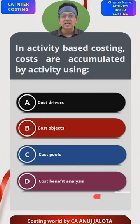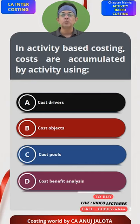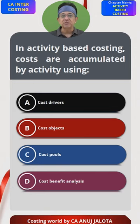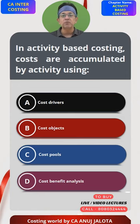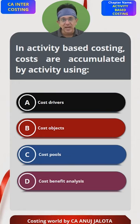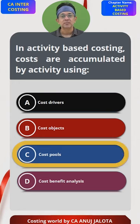This entire procedure is called cost pooling, where we try to collect all the costs that belong to the same activity — creating cost pools. When an activity's costs are finally totaled, that is called creating a cost pool. So the answer should be C, cost pools. That's the correct answer.